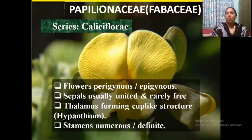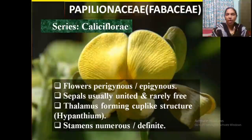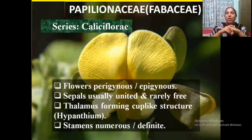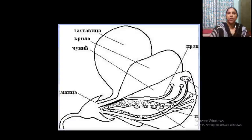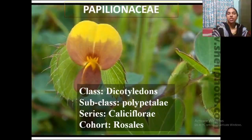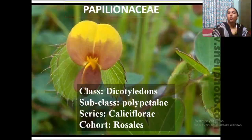Some common features of this group: flowers are perigynous — you cannot differentiate them as hypogynous or epigynous, meaning half inferior or half superior position. Sepals are united or may be free. Stamens are numerous; they may be united or free, and the thalamus has a cup-like structure known as the hypanthium. The flowers are usually bisexual. Its systematic position: subclass is Polypetalae, series is Calyciflorae, and order is Rosales.